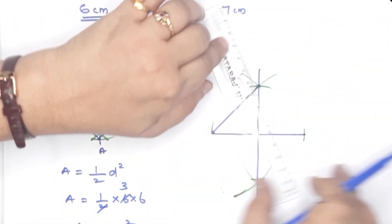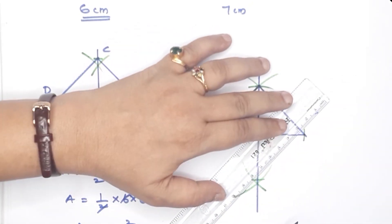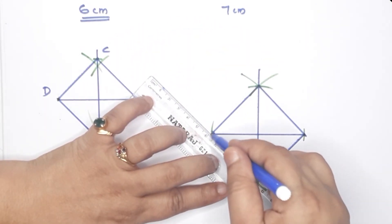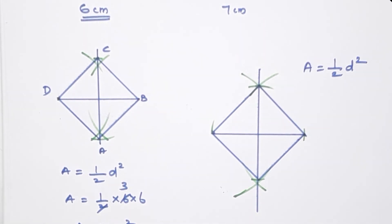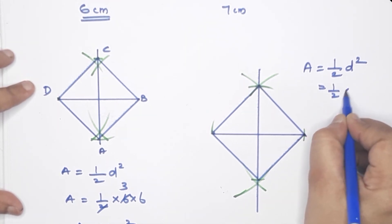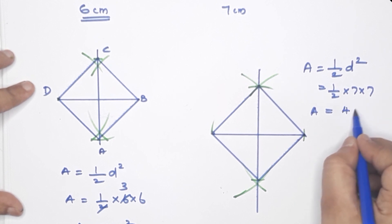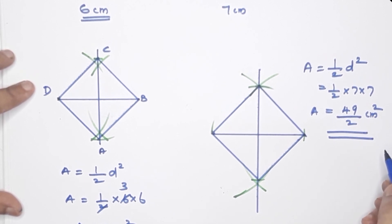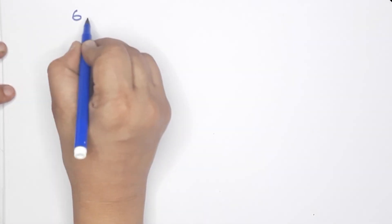Now let's compute the area. The square has a diagonal of 7cm. Area equals half D1 squared: area equals half times 7 times 7 equals 49 by 2 cm squared. For the rhombus example, the first diagonal is 6cm and the second diagonal is 8cm.